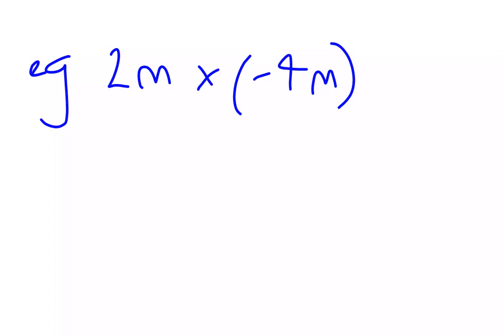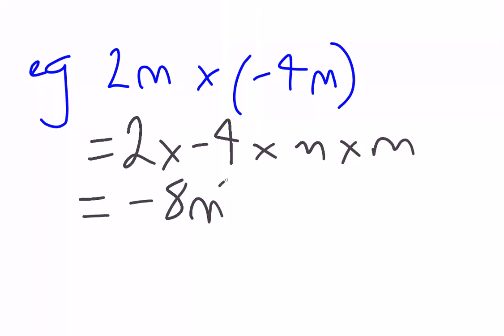Another example, 2m multiplied by negative 4m. Multiply our coefficients, 2 times negative 4, and multiply our pronumerals, m times m. One line of working to show what we're doing. 2 times negative 4 is negative 8, remembering a positive times a negative gives us a negative. m times m is m squared, and we don't need our multiplication sign. Our answer is negative 8m squared.